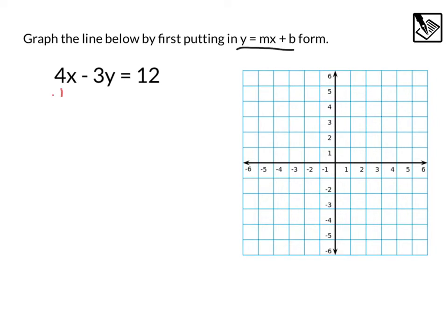The first thing I notice is I want my 4x to be away from the y term. So I'm going to subtract 4x from each side. That's going to leave me with negative 3y, because these 4x's cancel each other out, equals, and I'm actually going to put a negative 4x next, plus 12. These aren't like terms, so we can't combine them.